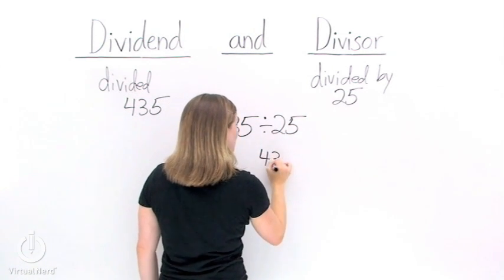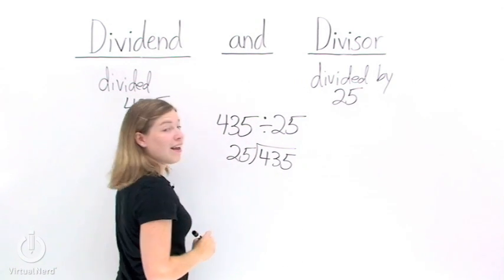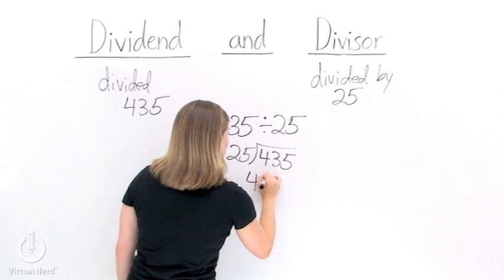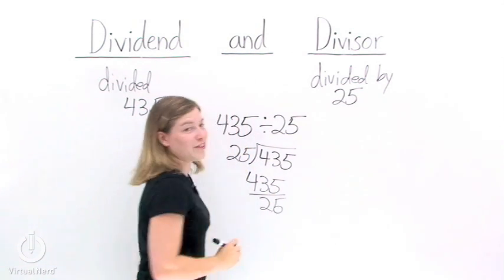If we want to write this to prep it for long division, it would look something like this. And if we want to write it in a fraction form, we'd put the dividend on top and the divisor on the bottom.